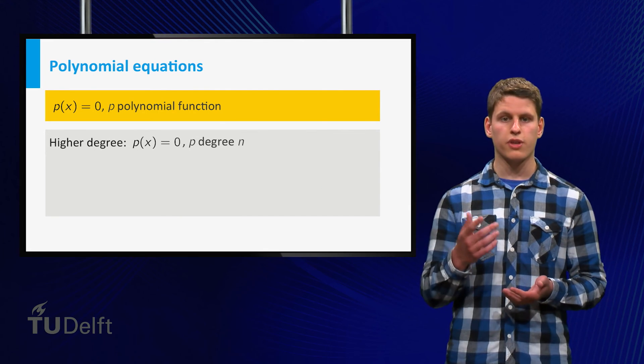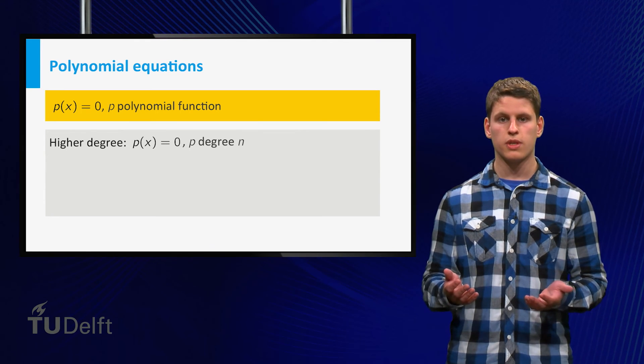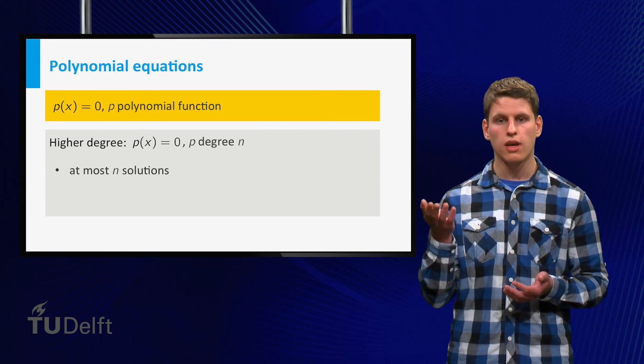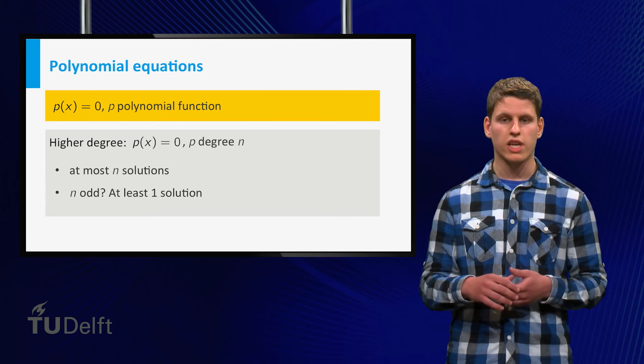However, we can say something about the number of solutions of p of x equals zero. Suppose p has degree n, then there are at most n solutions. If n happens to be odd, then there is at least one solution.